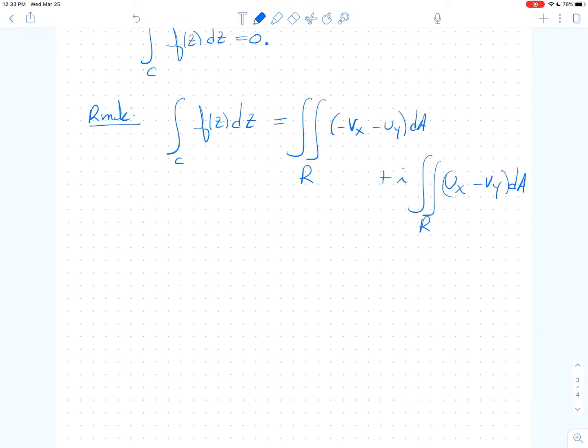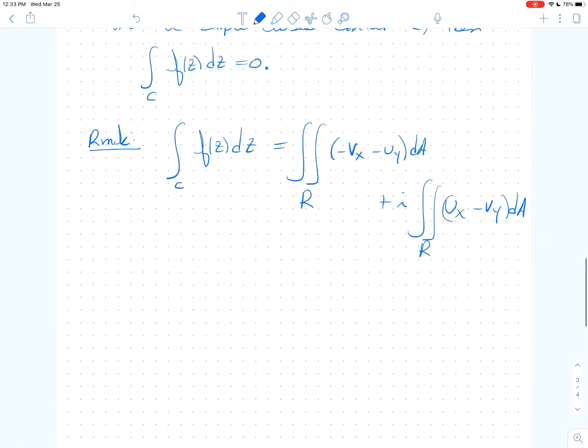And I do Green's Theorem both on the real part and the complex part. And now I remember though that I'm analytic so I satisfy the Cauchy-Riemann equation. So this is zero, right, because u partial y is minus v partial x. And this is zero because u partial x is v partial y. And so it follows immediately that this is zero.